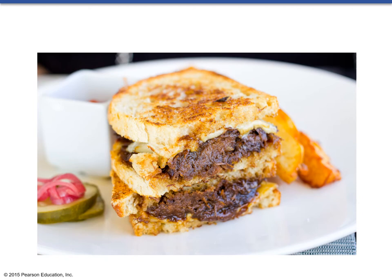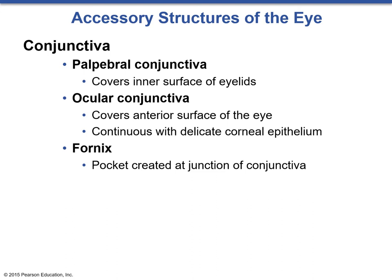From the eyelids, we move into the internal structure between the eyelids and the actual eye itself. Here we have a thin, stratified squamous epithelium called the conjunctiva. This will cover the inner surface of the eyelids, which would be the palpable conjunctiva, and then the surface of the eye, which would be the ocular conjunctiva. They meet up and create a pocket called the fornix.